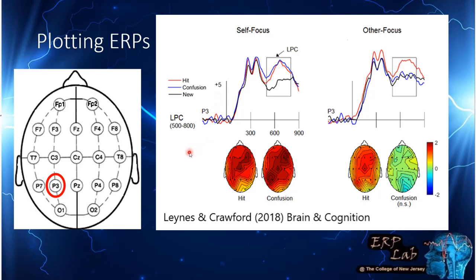These are the ERP signals for different items. A hit is an old item called old where the source was also remembered. A confusion is when they remembered the item was old but misattributed it to a different list, and a new item is an unstudied item. You're seeing an ERP component called the LPC in the time window 500 to 800 milliseconds, which this box defines. We'll also want to look at how this component was distributed across the scalp, so we take subtractions — like hits minus new items — to create a difference map.